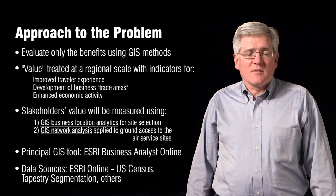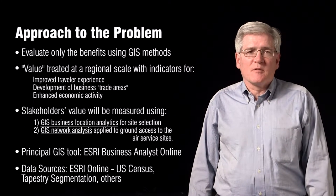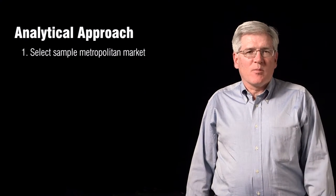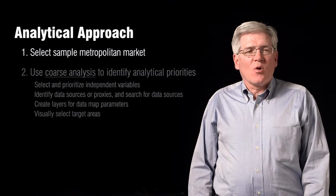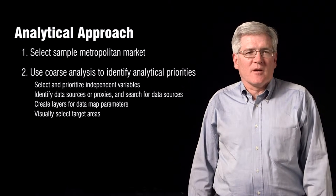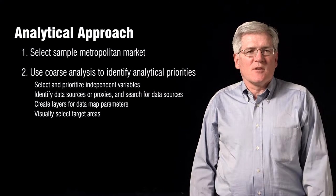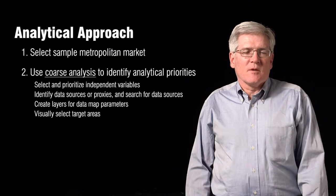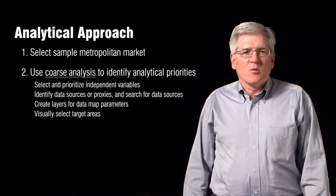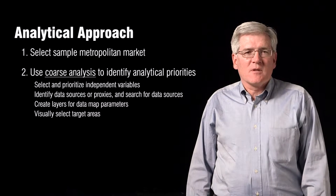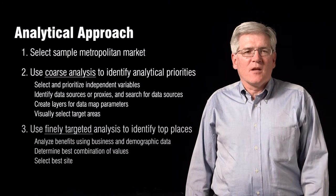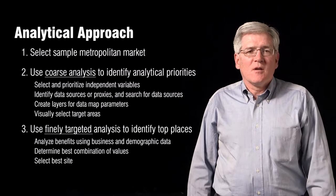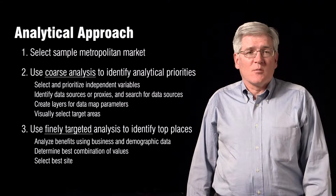I'm going to speak specifically about this very interesting dataset called Tapestry. The overall approach is three steps: we're going to look at a sample metropolitan area and do a coarse evaluation to figure out where in that metropolitan area we might want to locate such an airfield — using either direct measurements of data or proxies. We'll create data layer maps and then pick a general target area. Then, using fine-tuned analysis, we'll look at the benefits of specific spots on the ground and determine which is the best.